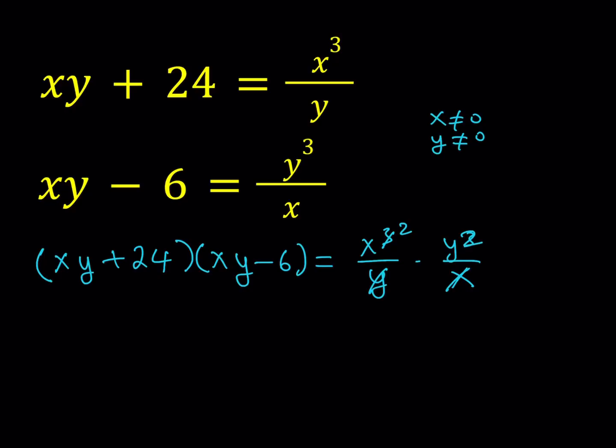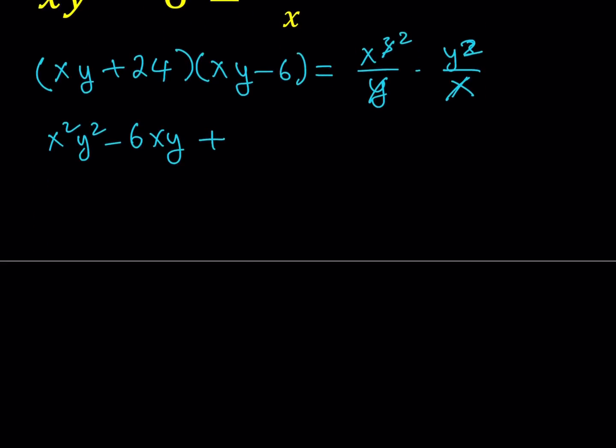If you distribute the left hand side, you get x squared y squared minus 6xy plus 24xy minus 144. And on the right hand side, you get x squared y squared, which is really nice. Now x squared y squared cancels out. We end up with 18xy. And if we divide both sides by 18, you're going to get xy equals 8.